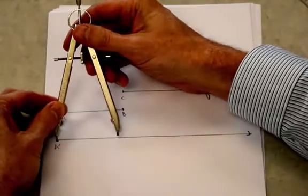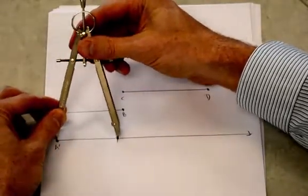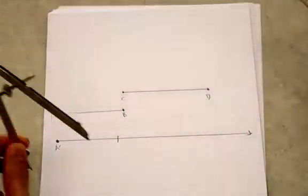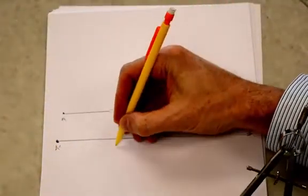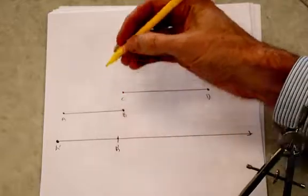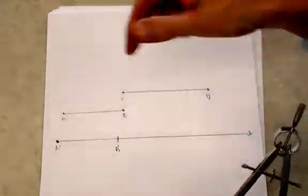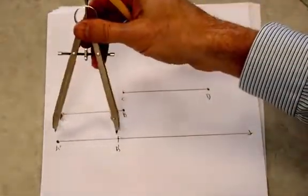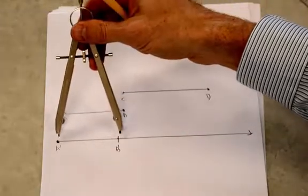So I'm going to translate that down to here and then make a mark. So this point here is going to be B prime. So this segment A, B prime is the same measure as segment A, B. I just translated it down here.